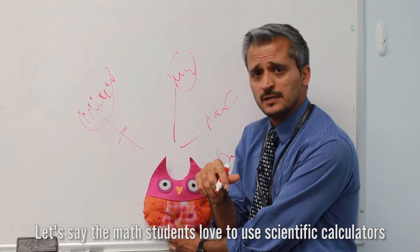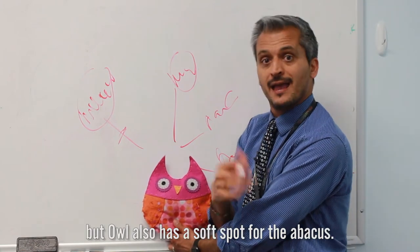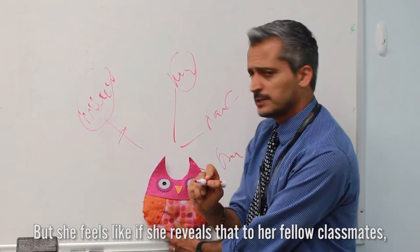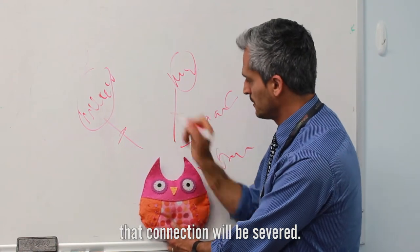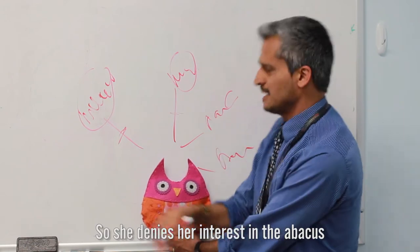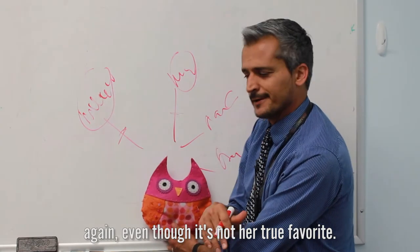Let's say the math students love to use scientific calculators, but owl also has a soft spot for the abacus. But she feels like if she reveals that to her fellow classmates, that connection will be severed. So she denies her interest in the abacus and starts using the scientific calculator again, even though it's not her true favorite.